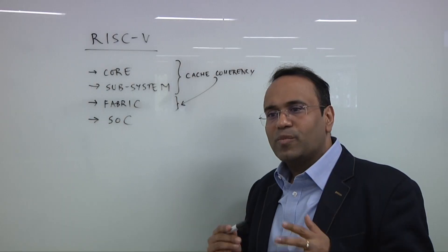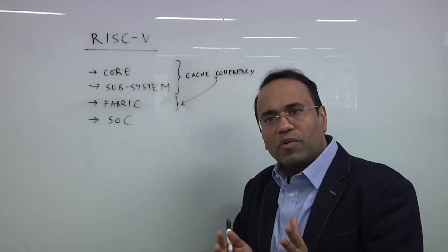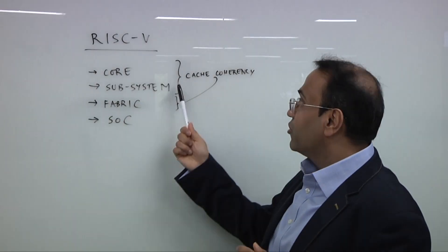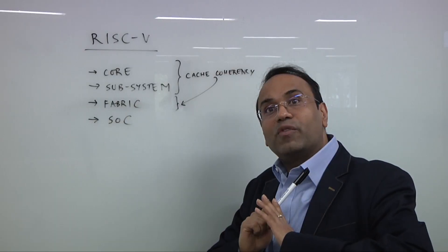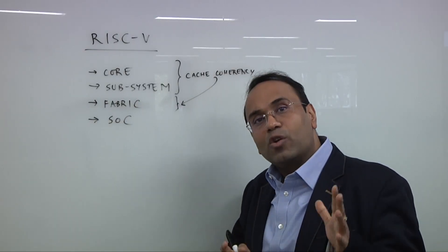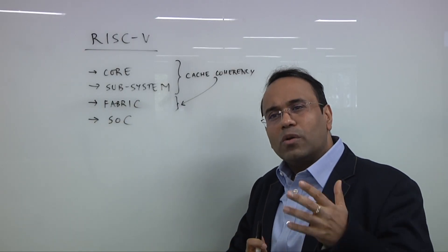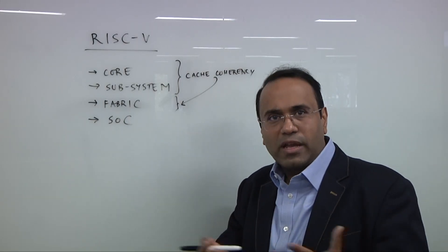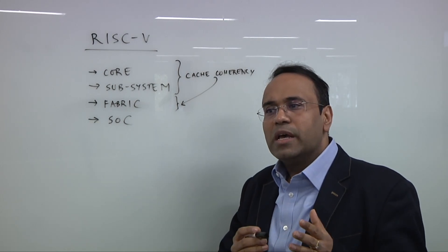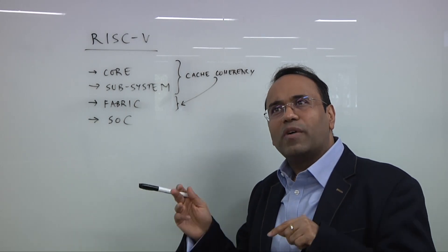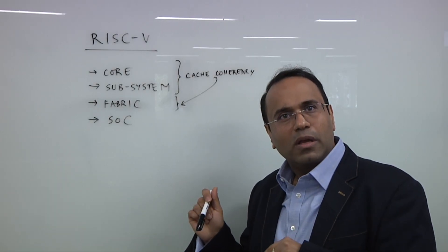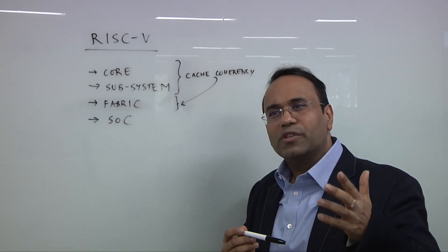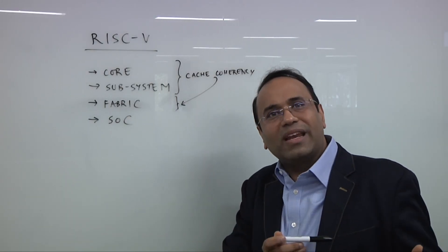So what we did at Axiomize is to build an executable formal verification test bench that can be used for core verification. So the problem that that solves is not the coherency problem, but actually you can find architectural correctness for the entire core. Now if you do want to learn how to write these assertions, then, I mean, learning can be done. We do offer learning potential with Axiomize. We do have training courses. There's nothing specific about RISC-V that makes it difficult for formal capabilities. But the challenges in embracing formal for RISC-V are pretty much the same as it is with formal for any other design.